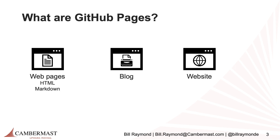From a licensing perspective, if you have the enterprise or private cloud version of GitHub, you can still get Pages, but they're only going to be limited to the people that can see the repo.